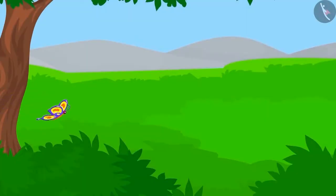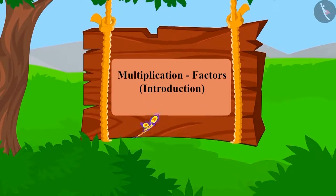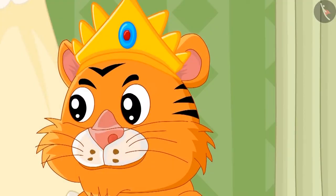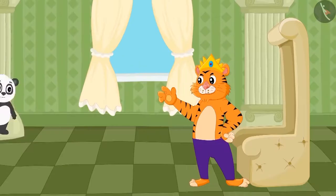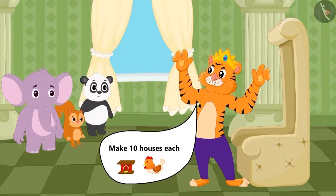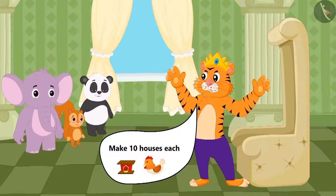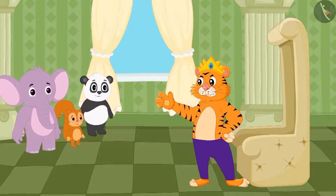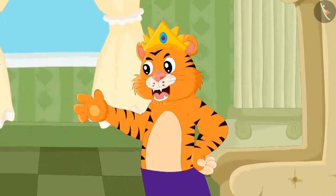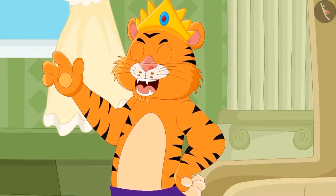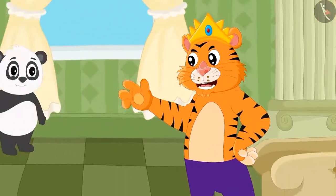Children, in this lesson we will learn about factors by multiplication. One day the king of the jungle gave ten hens each to Golu, Chanda, and Appu and asked them to build a home for them. But he kept a condition — the three of them would have to build different types of houses for the hens.